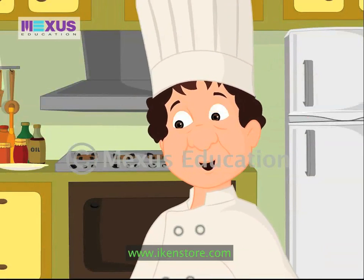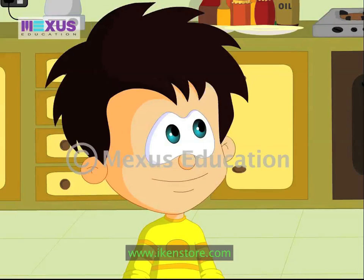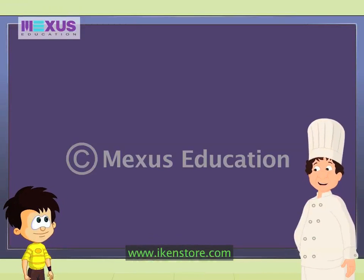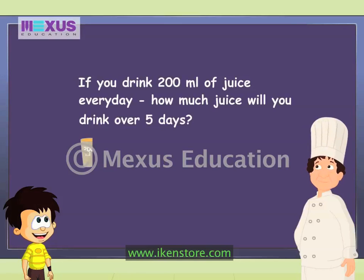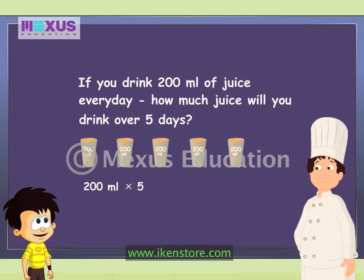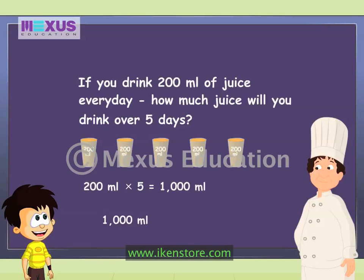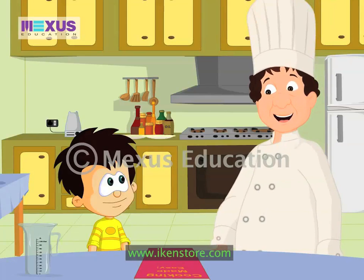Let me ask you some questions to check what you know. If you drink 200 ml of juice every day, how much juice will you drink over 5 days? I just need to add 200 ml five times — or, 200 added 5 times is the same as multiplying 200 by 5. So I drink 200 multiplied by 5, which is 1000 ml of juice in 5 days. Hey, that's the same as 1 litre! Absolutely correct, JC — that was great!